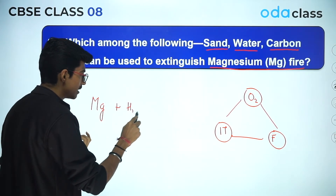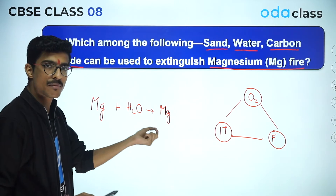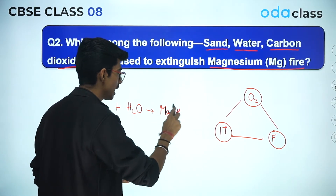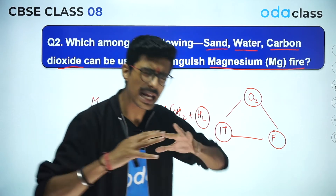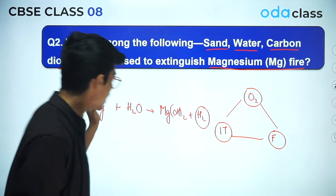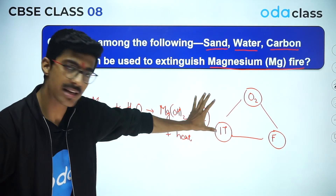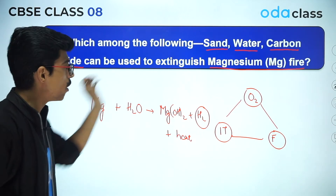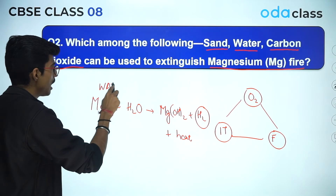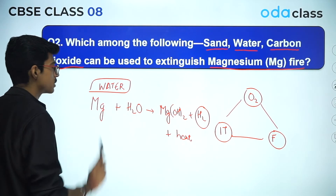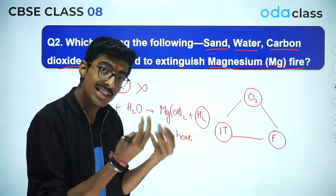Now, if magnesium is burning and you pour water on it — magnesium reacts with water to form magnesium oxide, which is soluble in water and forms magnesium hydroxide, and it will also form hydrogen gas. This hydrogen gas is highly inflammable, and in this reaction a very large amount of heat is released. So instead of extinguishing the magnesium fire, adding water will actually cause more fire to catch due to the hydrogen gas produced.